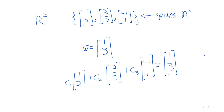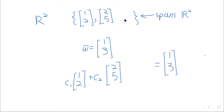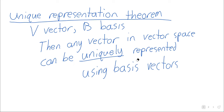My claim is that if I have not just a spanning set but a basis, that won't happen — the representation will be unique. So let's just accept that if I erase that third vector, the result is a basis. If it's a basis, it's still a spanning set, and (1,3) should still be a linear combination of the remaining vectors. But now there should be a unique solution. At least, that's what the Unique Representation Theorem is claiming.